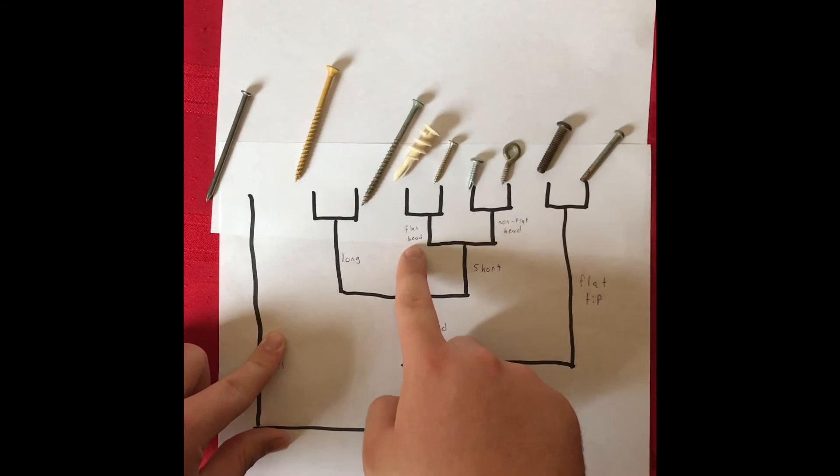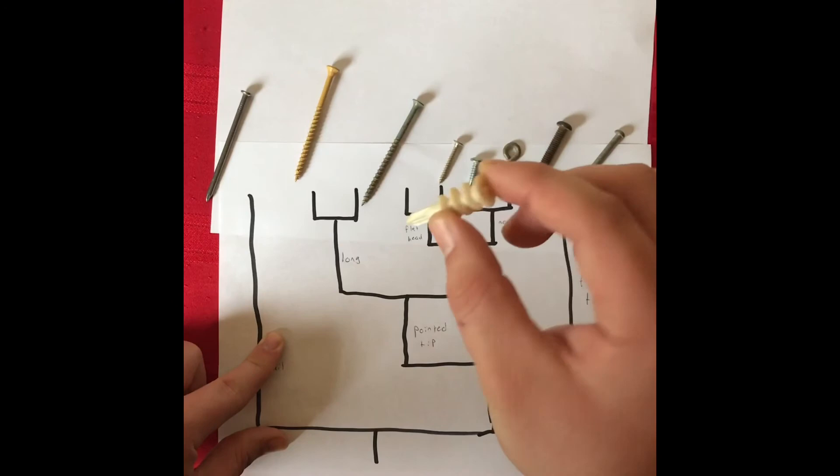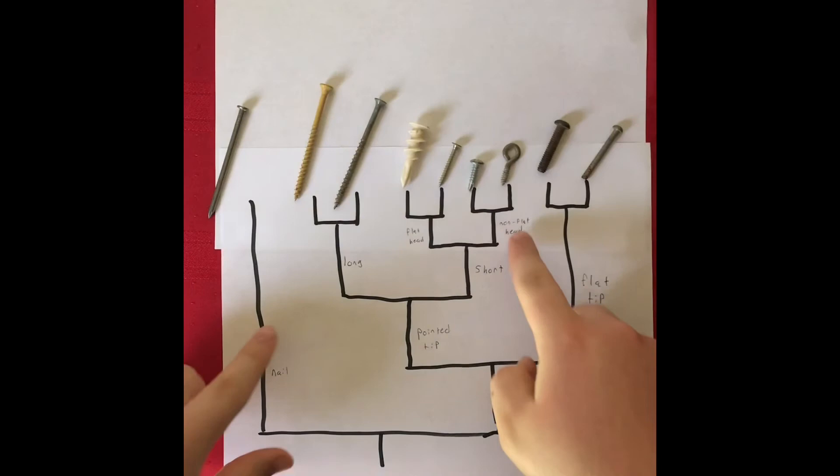The short lineage diverged here into flat head and non-flat head screws. The flat head screws diverged once more into the metallic OTUs that are both short and pointed tip and also the plastic OTU that is flat head, short, and pointed tip.